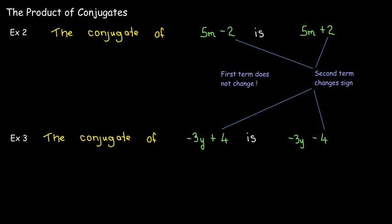What changes is the sign on the second term. It's going to change sign. So here I add a negative 2. In the conjugate, it's positive 2. And vice versa. So here I add a positive 4. In its conjugate, it's negative 4.